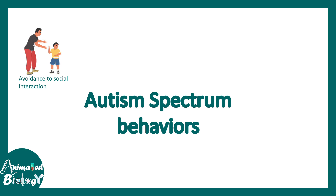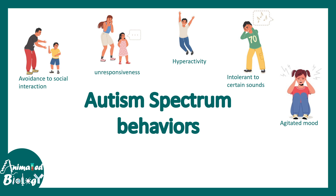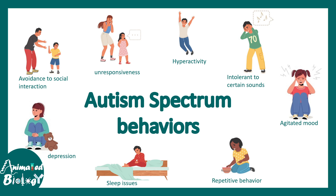There are different kinds of behaviors typical to autism. These include avoidance of social interaction, avoidance of eye contact, and unresponsiveness towards interaction — for example, a child being totally unresponsive to parents or refusing to hug them. Hyperactivity is sometimes prevalent. They could be intolerant to certain sounds, very sensitive, have an agitated mood, or on the other side show highly depressed behaviors, sleep-related disorders, and repetitive behavior. In extreme cases, epilepsy can also be associated with autism spectrum disorder.